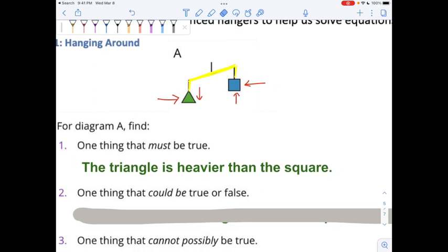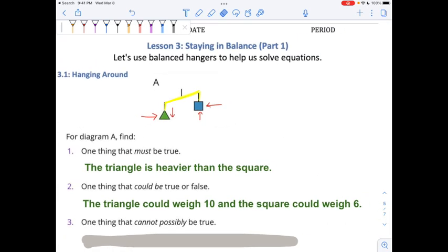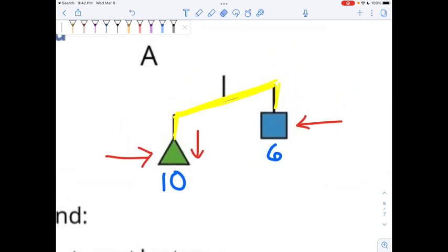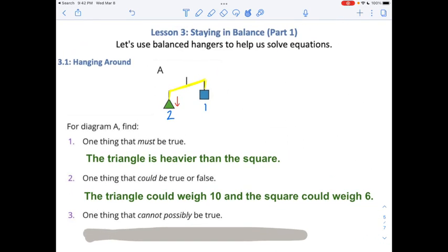Something that could be true or false is that the triangle could weigh 10 and the square could weigh 6. The triangle could weigh 10 and the square could weigh 6. That would pull the hanger down towards the triangle. But it wouldn't have to be 10 and 6. It could be 4 and 2. It could be 2 and 1. As long as the triangle weighs more, as long as it's got a bigger number, then it would be tilted this way. So, the triangle could weigh 10, the square could weigh 6. We don't know for sure. So, it could be true or it could be false.